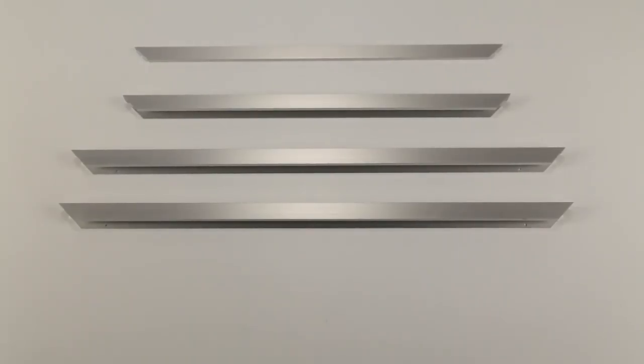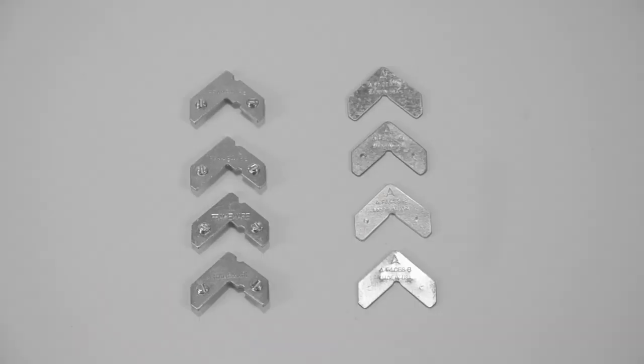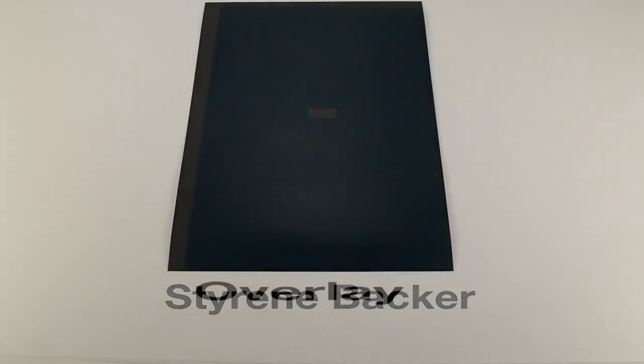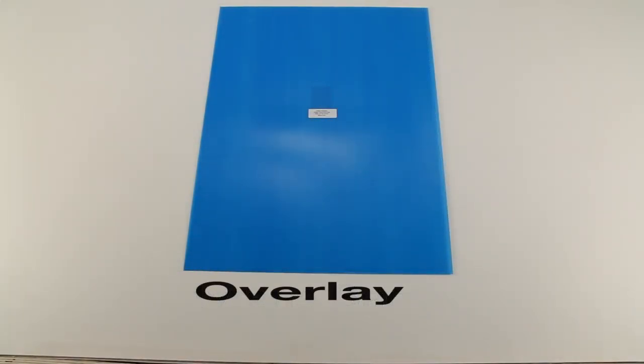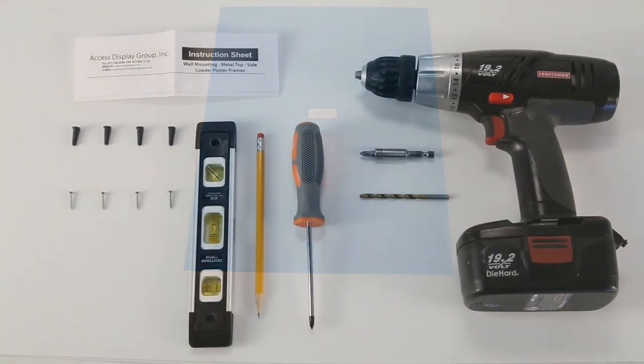there should be 5 aluminum frame rails, 4 corner joining angles consisting of 8 steel pieces, a backing board, a clear plastic protective overlay with removable blue film, and wall mounting hardware.